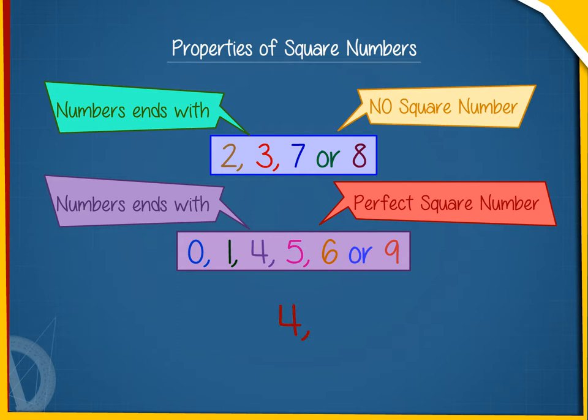For example, 4, 121, 100, 25, 36, 169, etc. are perfect squares.